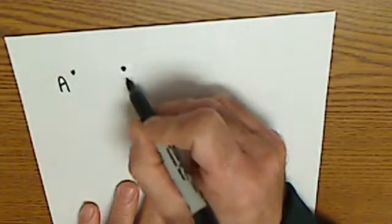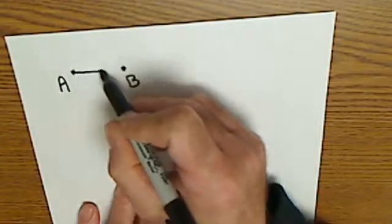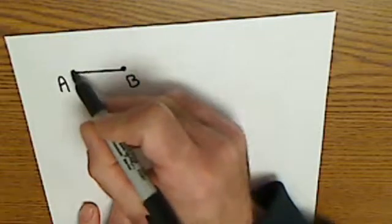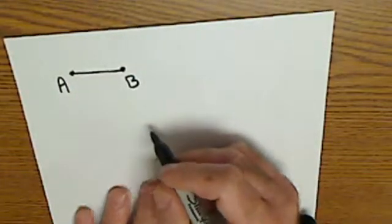Two points connected is a line segment. It's finite, has a starting point and ending point.